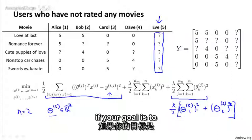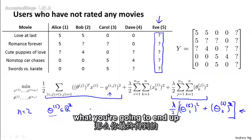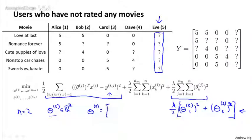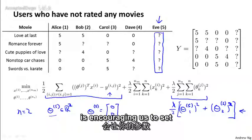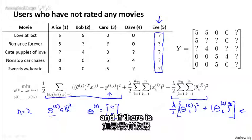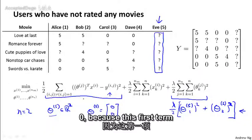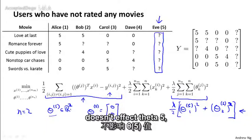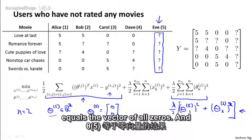In other words, we want to minimize this lambda over 2 theta 5 subscript 1 squared plus theta 5 subscript 2 squared. And of course, if your goal is to minimize this term, then what you're going to end up with is just theta 5 equals 0, 0, because the regularization term is encouraging us to set parameters close to 0.